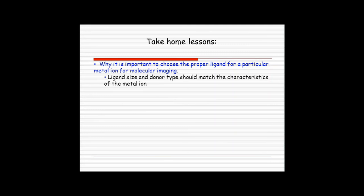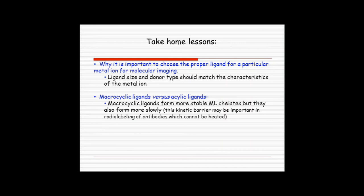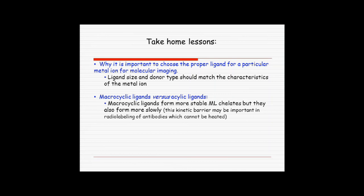Okay, so the take-home lessons. I think hopefully I've shown you why it's important to choose a proper ligand for a particular metal ion for molecular imaging. The ligand size and donor type should match the characteristics of the metal, so it's important that you consider these things. Macrocyclic ligands versus acyclic, well, there are applications for both of them, but I think you need to consider which are the important ones. The macrocyclic ligands form stable complexes, but they also tend to form more slowly. So if you're in a hurry, if you have a short-lived radionuclide, then you have to worry about that. And the question then is what's more important for metal chelate applications in vivo? Most people talk about thermodynamics, but I really think that that isn't all that important. The kinetics are probably the more important consideration. So if you're really serious about this in terms of translational work, you should worry about kinetics because I think it's really quite important. Okay, I think that's my last slide. Thank you very much.